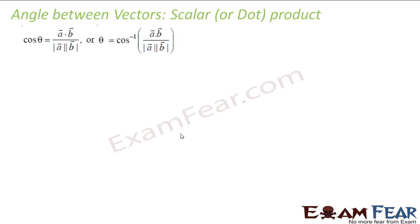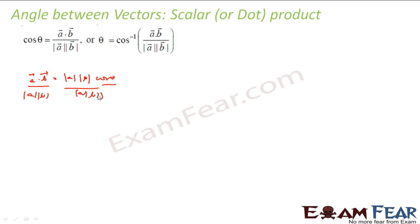Now we will learn how to find the angle between vectors using the scalar product. I know that vector A dot vector B equals magnitude of A into magnitude of B into cos theta. So cos theta equals (A dot B) divided by (magnitude of A into magnitude of B), or theta equals cos inverse of this value.